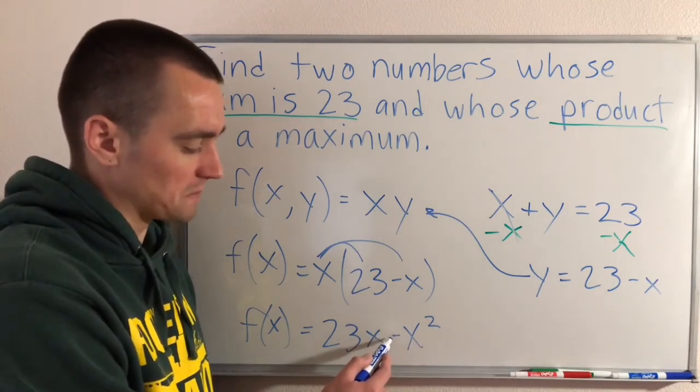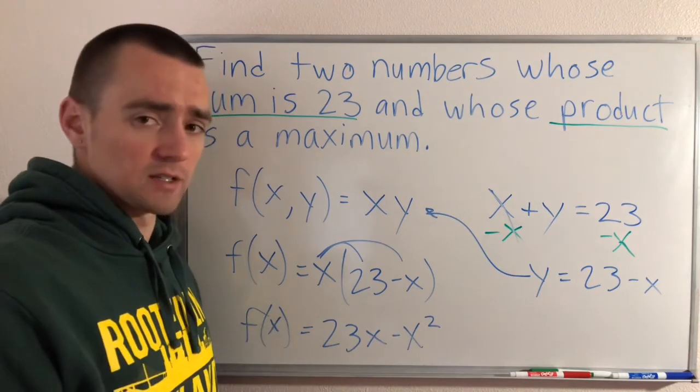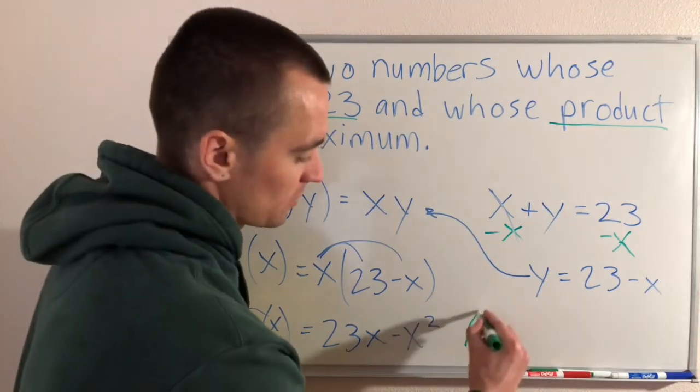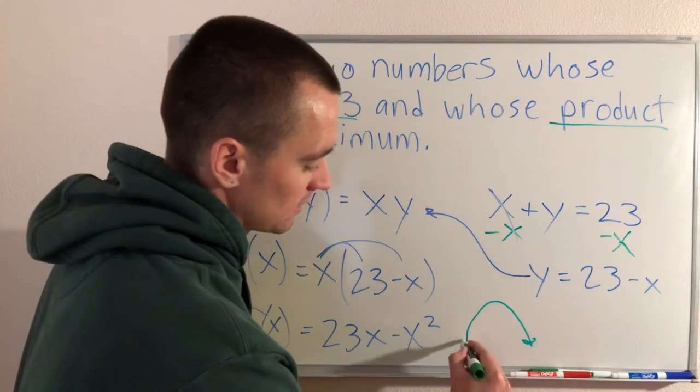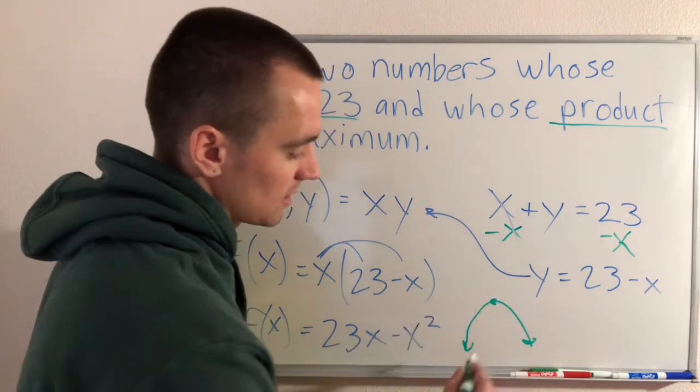And since the X squared term has a negative coefficient - it's minus X squared - that tells us it's a downward facing parabola. So if we think about what the shape of a downward facing parabola looks like, it would look something like this.